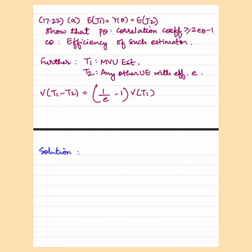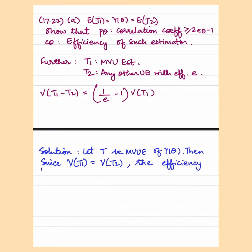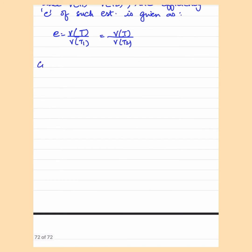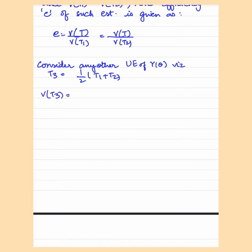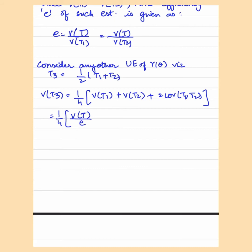Let's start with the solution. Let's take T as a minimum variance unbiased estimator of gamma theta, and we have T1 and T2 as unbiased estimates of gamma theta so that variance of T1 equals variance of T2. Now suppose we consider any other unbiased estimator of gamma theta. Suppose T3 equals 1 upon 3 T1 plus T2. Now variance of T3 equals 1 upon 4 times variance of T1 plus variance of T2 plus 2 times the covariance of T1 and T2.